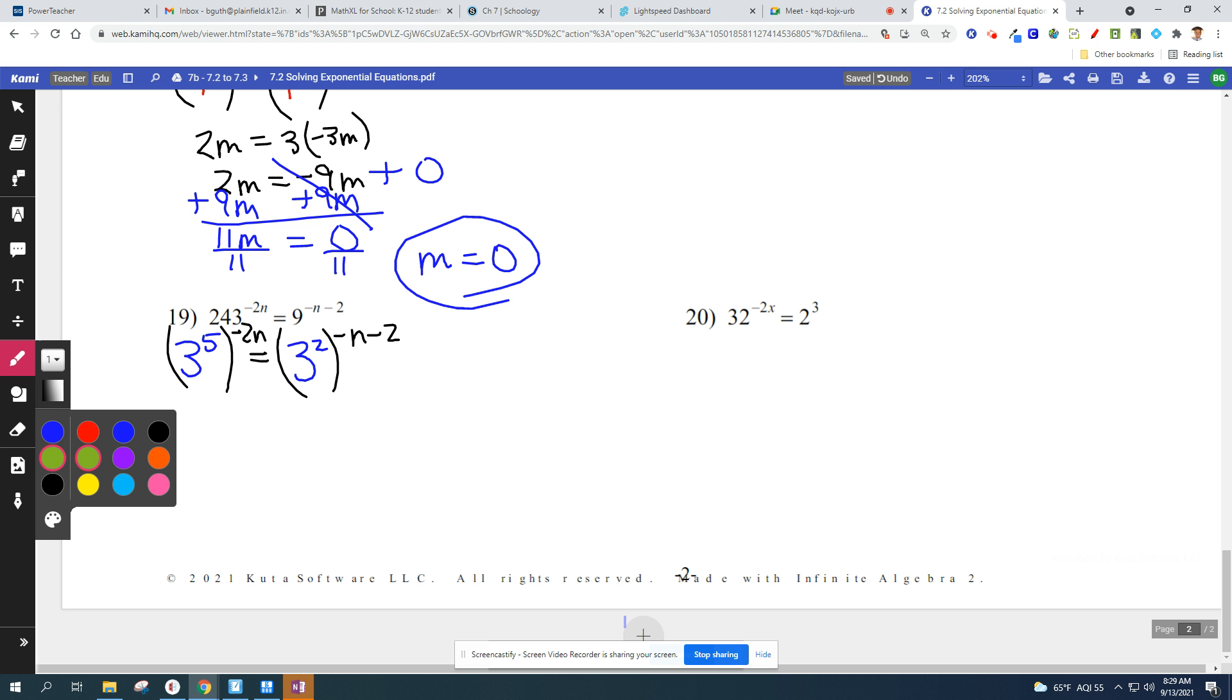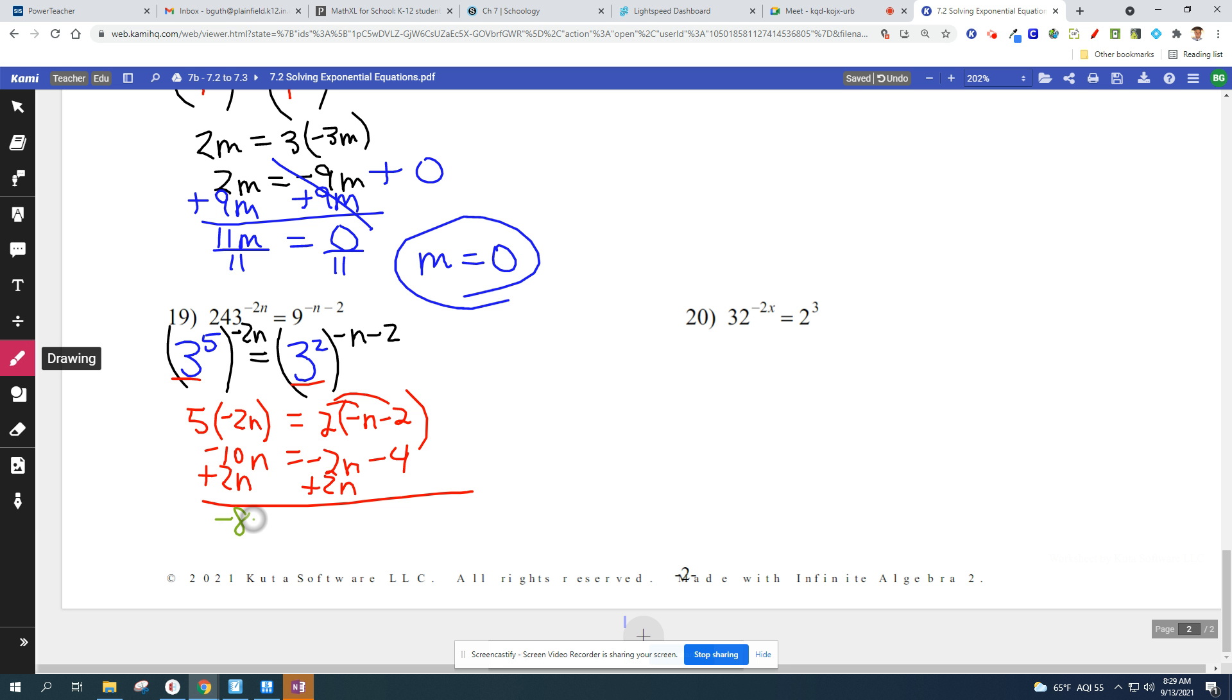Once you get that match, once you get a base 3 and a base 3, you can ignore it and just look at the exponents. 5 times negative 2n equals 2 times negative n minus 2. Let's multiply. Let's distribute. Add 2n to get your variables together. That's negative 8n equals negative 4. We're going to divide by this negative 8 to cancel the negative 8. n equals negative 4 over negative 8 and then it reduces to 1 half. n equals 1 half.